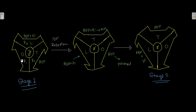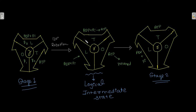In stage one, the O state is empty. The loose state (L state) contains ADP and Pi, and the tight state (T state) contains ATP. This is the condition in stage one, which then transitions to the logical intermediate state.